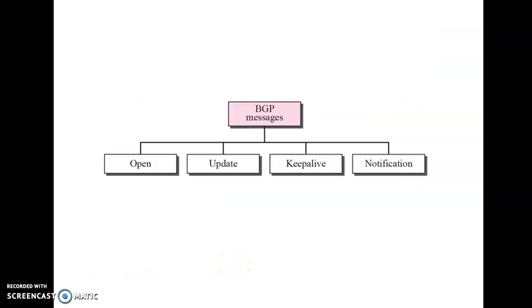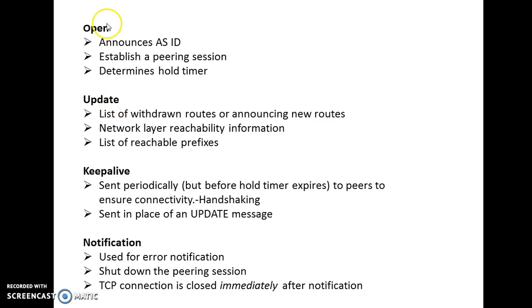At last, we will try to understand the different BGP messages, which are: Open, Update, Keep Alive, and Notification. The Open message is used to establish a peering session. It first announces the autonomous system ID and then establishes a pairing session for a determined full time.